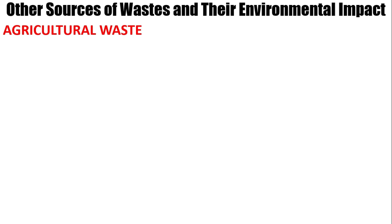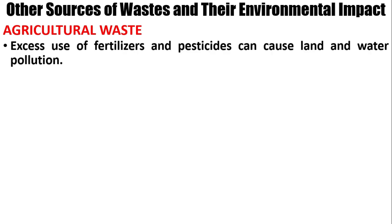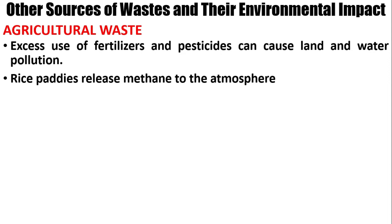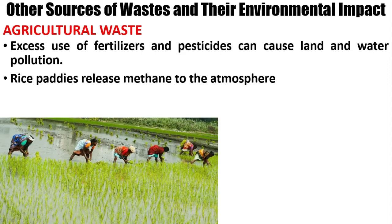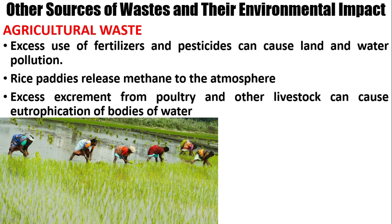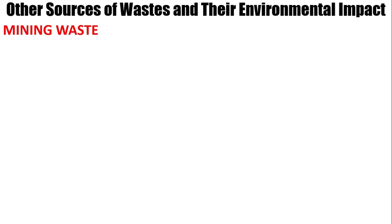Next is agricultural waste, from excess use of fertilizers and pesticides, which can cause land and water pollution. For example, rice paddies release methane to the atmosphere. A paddy field is a flooded field of arable land used for growing semi-aquatic crops, most notably rice and taro. The methane in rice paddies is produced by microscopic organisms that respire carbon dioxide. Agricultural waste is also caused by excess excrement from poultry and other livestock, which can cause eutrophication of bodies of water.